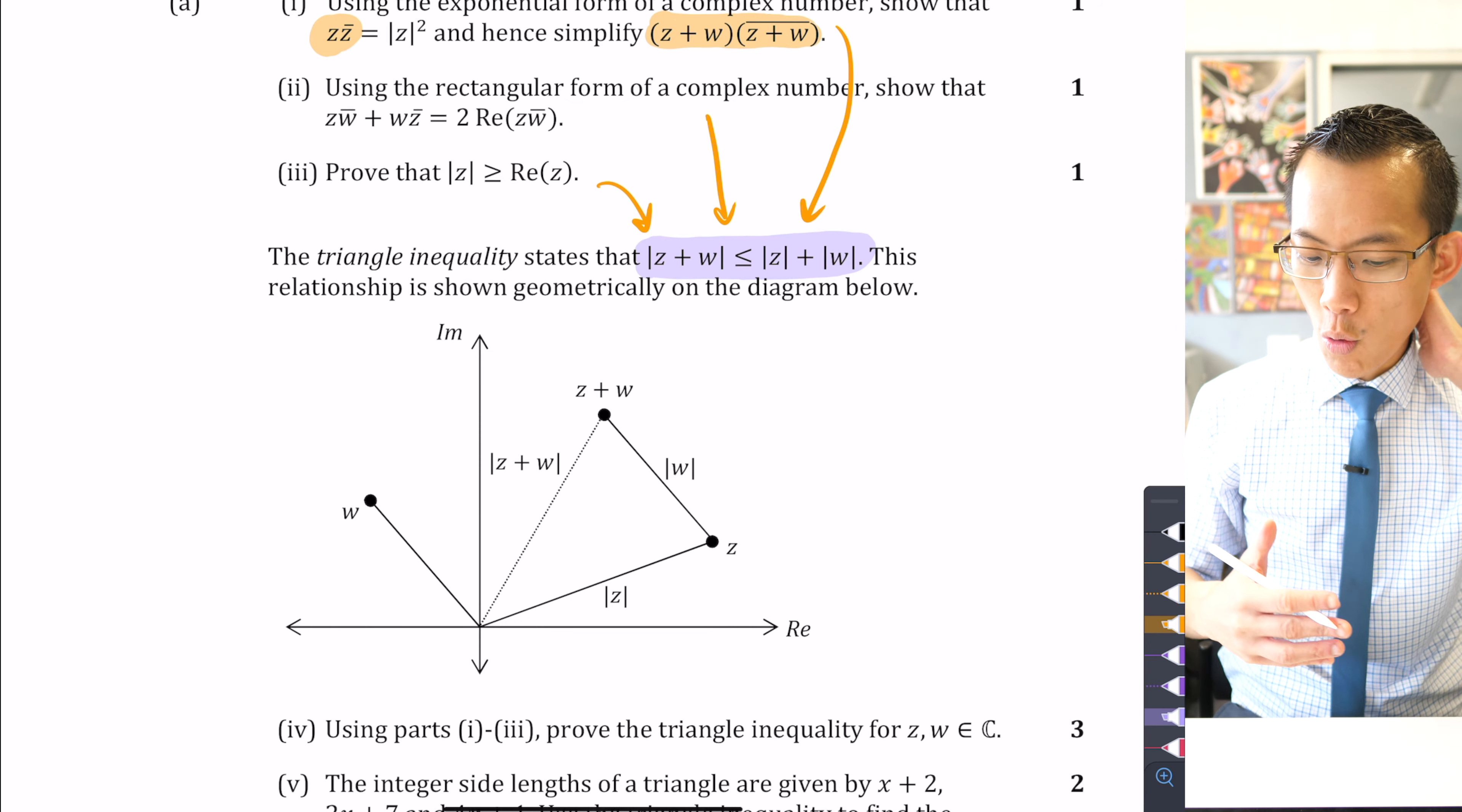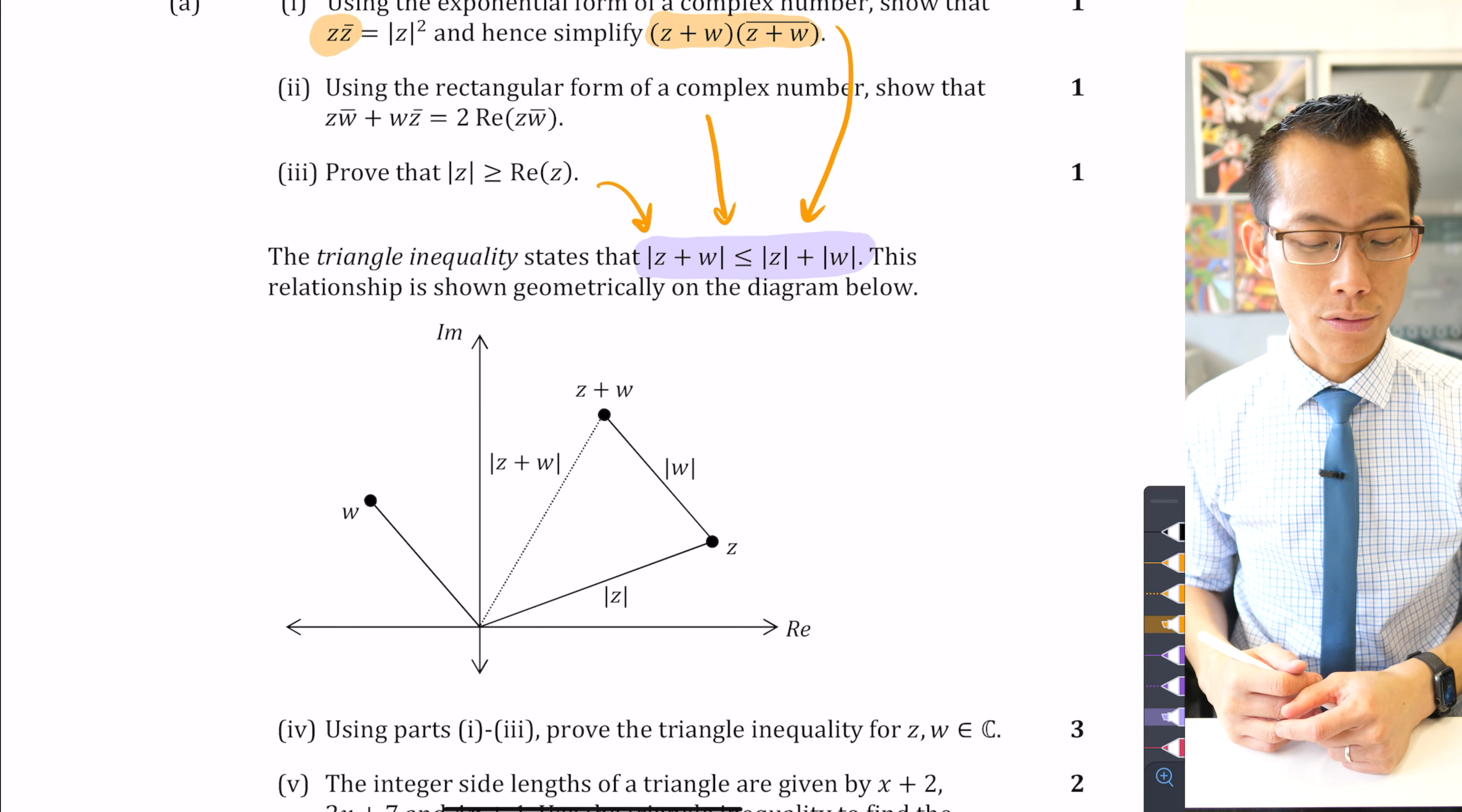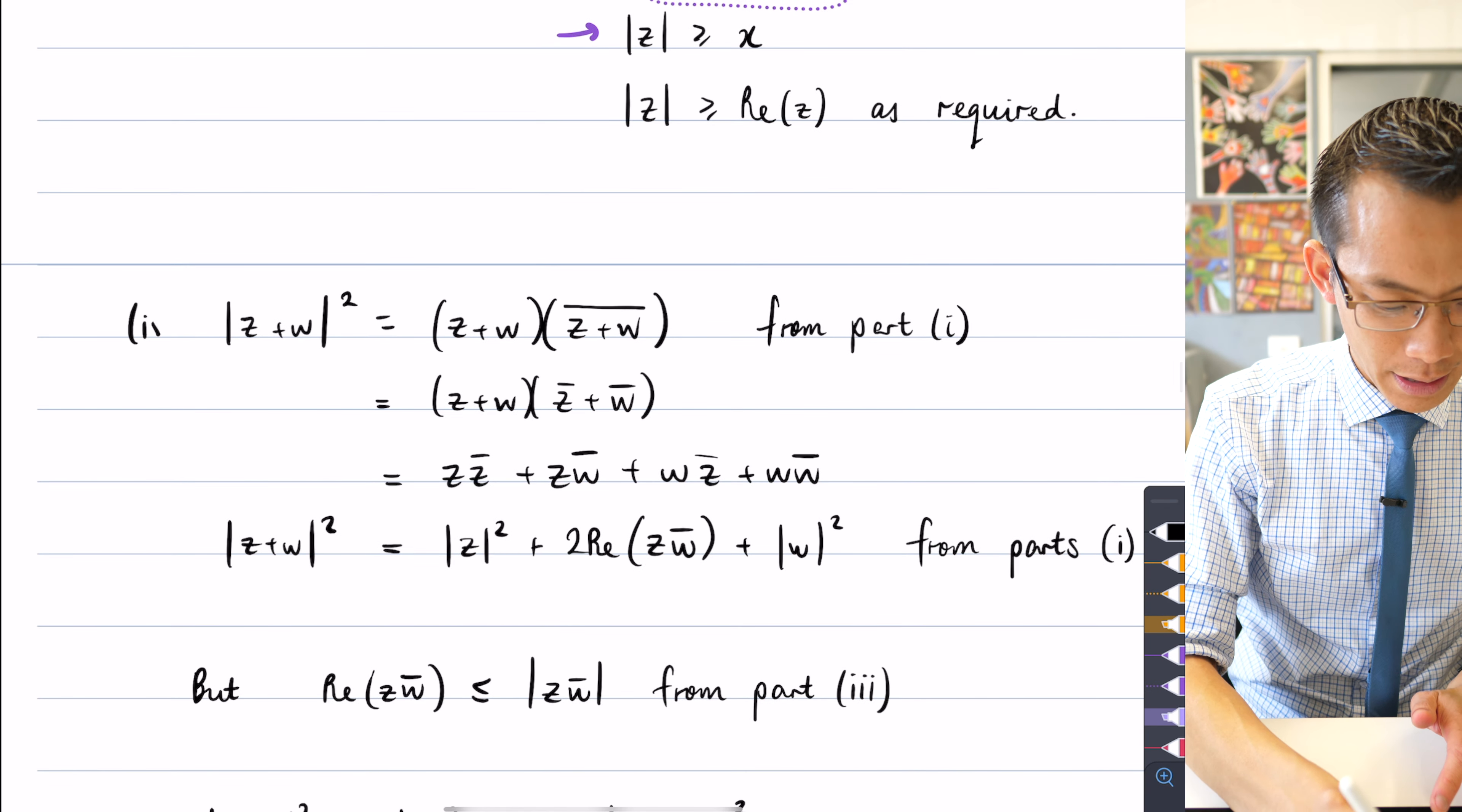I'll admit, this is quite tough. You're more used to seeing part A and then hence part B, so you only have to keep one thing in your mind that you're going to use for the next bit. But here, because you've got three parts to use, that makes it much more challenging. And that's part of what we signed up for in extension two. So let's have a go, part four.